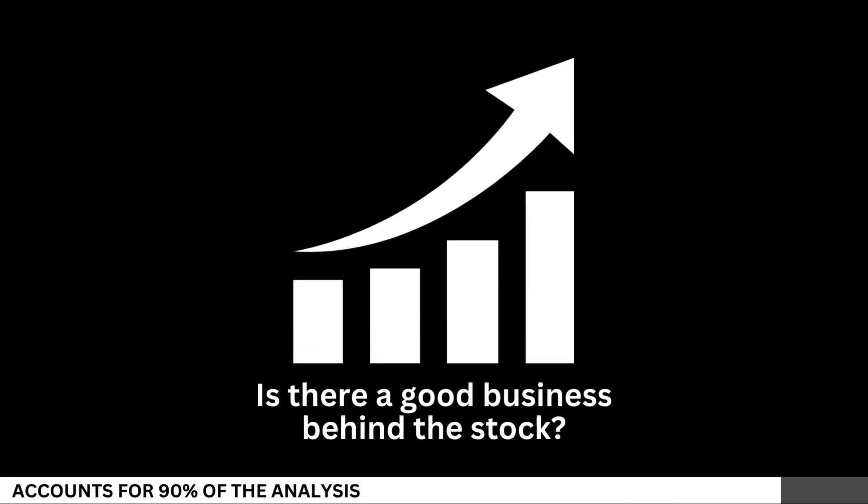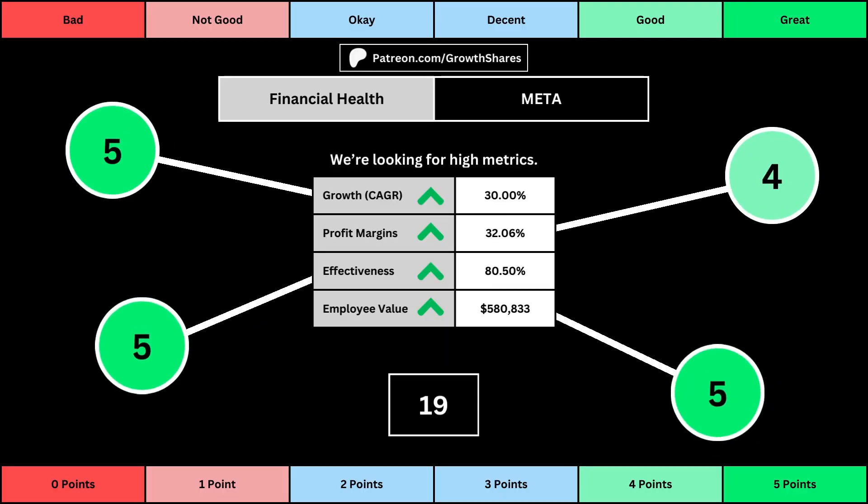We'll look at 14 metrics to determine the business fundamentals. The first set of metrics deals with the company's financial health, with its projected earnings growth for the next five years, its profit margins, its effectiveness — which looks at the company's returns on equity, assets, and invested capital — and then the employee value, which looks at how much value the average employee adds to the business. You can see the values for each of these metrics, as well as the point totals awarded in the bubbles.